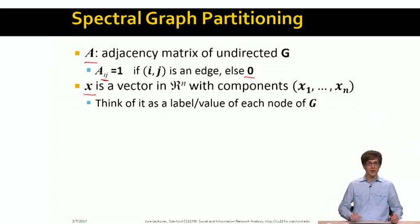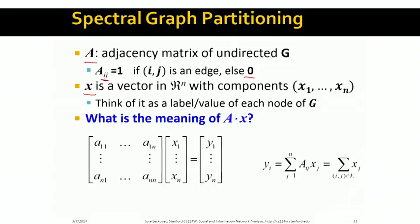So the way we can now think of this network is that basically every entry of this vector is a label or a value of a node in the network. So basically this means that the x_j basically corresponds to the value of node j in our graph.